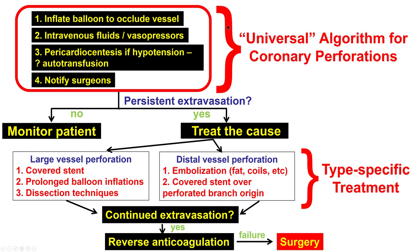The algorithm for treating coronary perforations is standard. The very first step is to inflate a balloon to occlude the vessel — in this case less critical because bleeding was very slow, but still a good idea. Give fluids, perform pericardiocentesis if there is tamponade, and notify the surgeons. If there is persistent extravasation, treat the cause. In the case of distal vessel perforation, the most common treatment is embolization, either with fat or with coils.